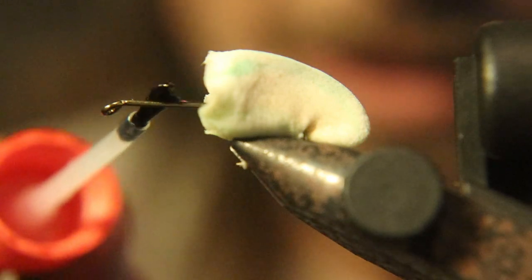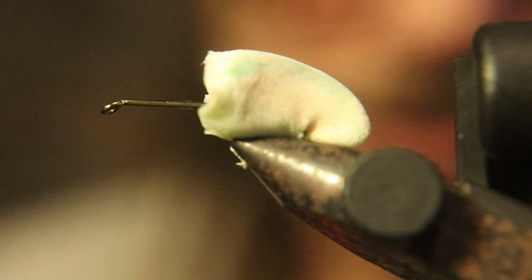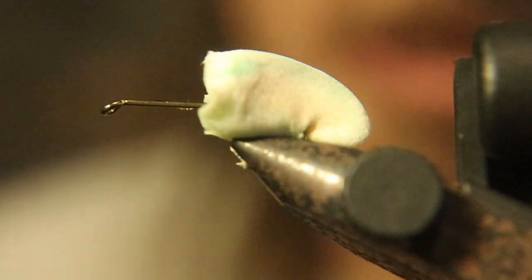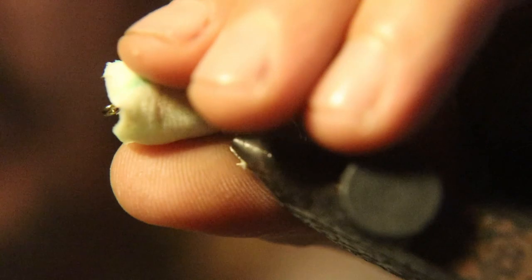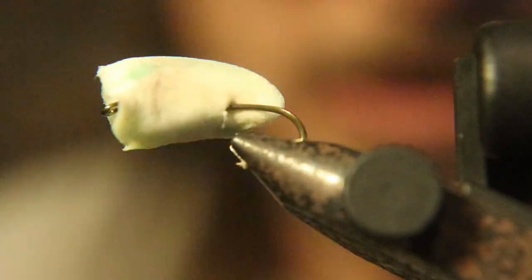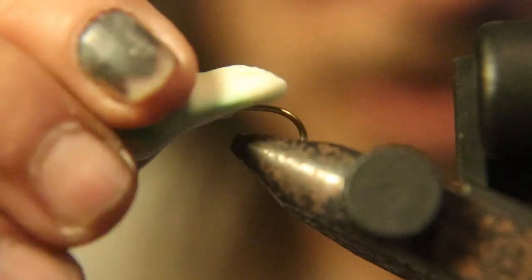This step is very important. I put finger glue or super glue on the hook shank, and I'm going to slide the earplug forward onto the super glue. That'll keep it from spinning or anything else around this hook.